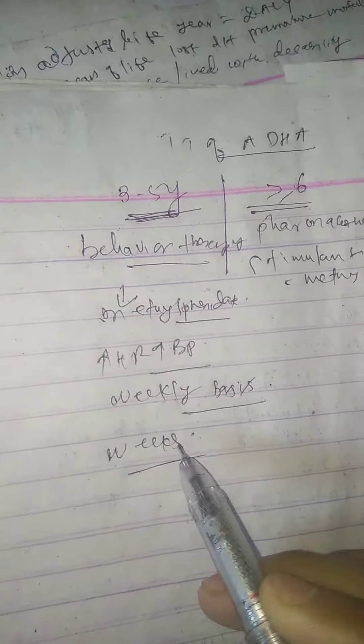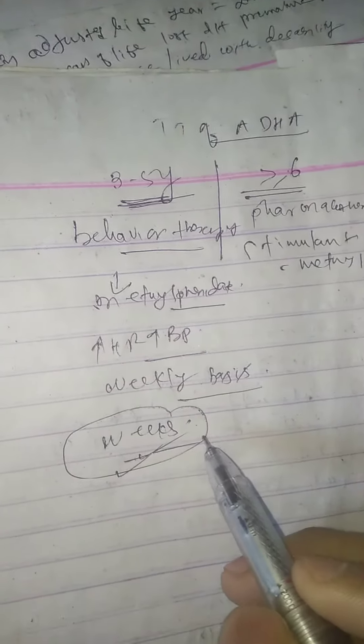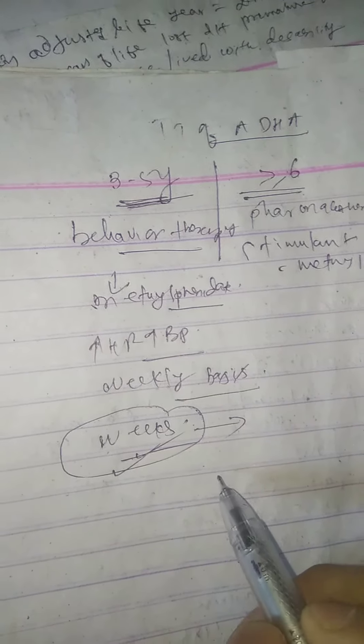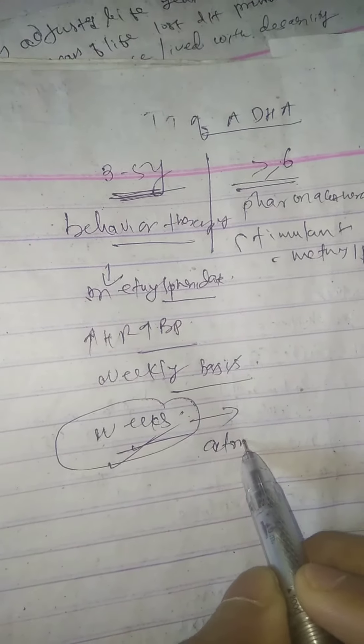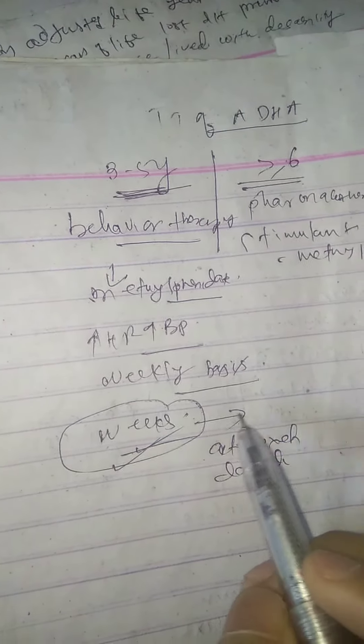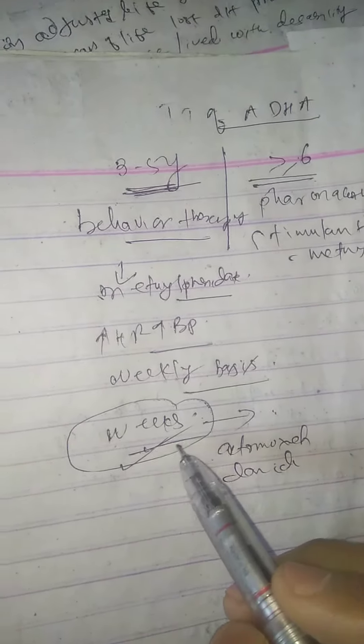If a patient is not responding within 2 to 3 weeks, then we should switch to another stimulant or other non-stimulants like atomoxetine, clonidine. Continued treatment is unlikely to result in further improvement.